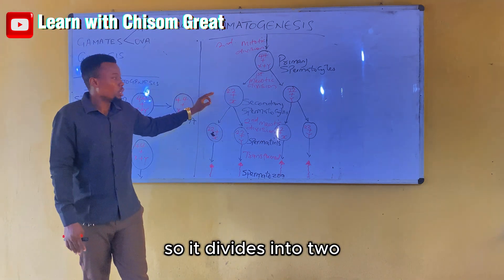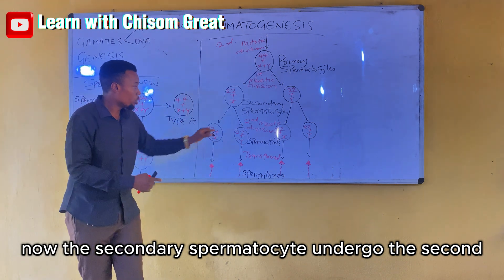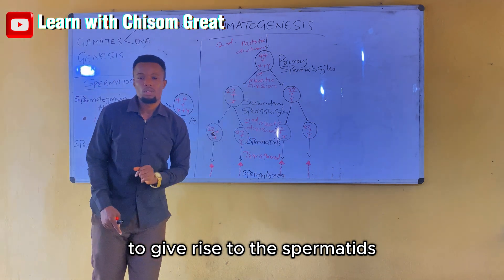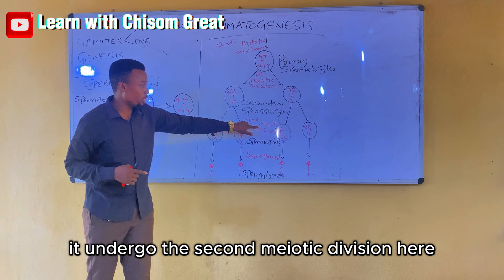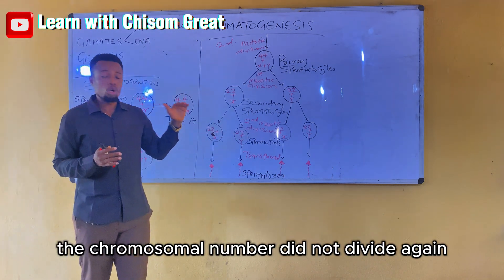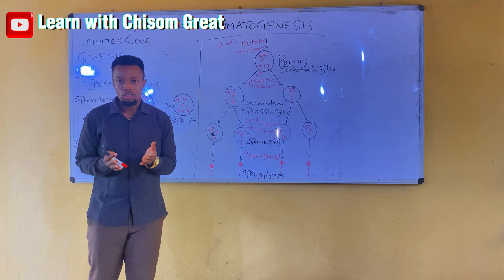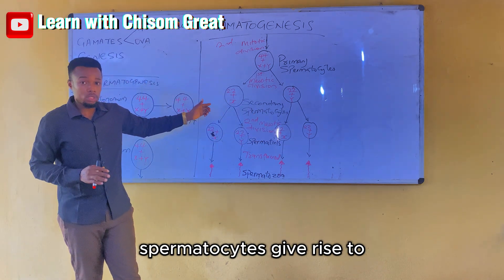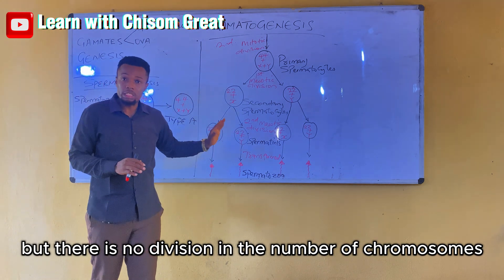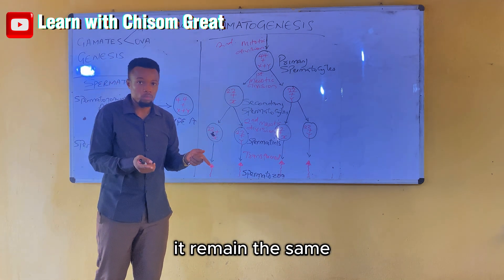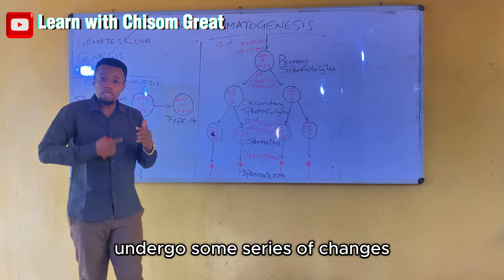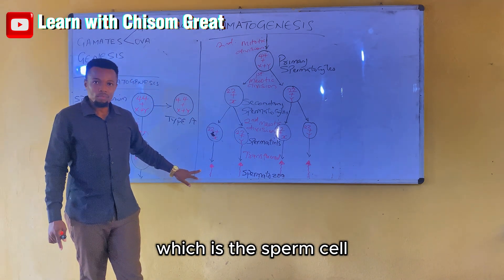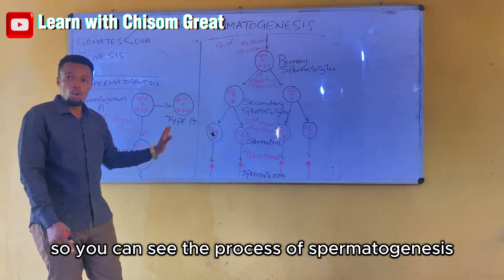The secondary spermatocytes each divide into two. The secondary spermatocyte undergoes the second meiotic division to give rise to the spermatids. It undergoes the second meiotic division to give rise to the spermatids, and now the chromosome number does not divide again — it remains the same. You can see these four spermatids that the secondary spermatocytes give rise to. The spermatids then undergo some series of changes to be transformed into the spermatozoa, which is the sperm cell.